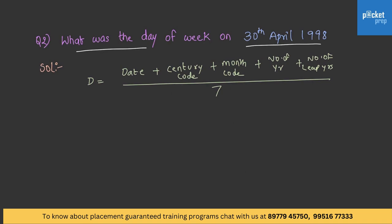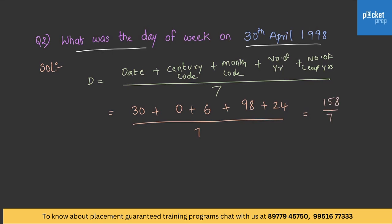Similar question: What is the day on 30th April 1998? Date = 30, century code = 0, month code for April = 6, number of years = 98, leap years = floor(98/4) = 24. So (30 + 0 + 6 + 98 + 24) / 7 = 158 / 7, remainder 4. Day code 4 is Thursday. Therefore 30th April 1998 is Thursday.